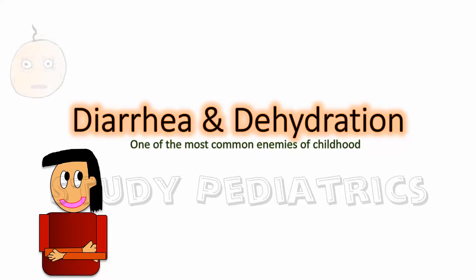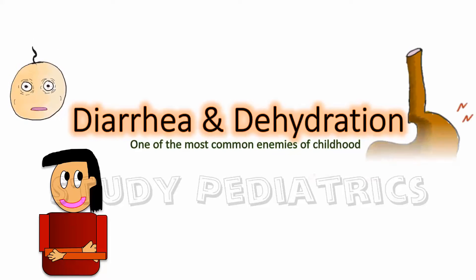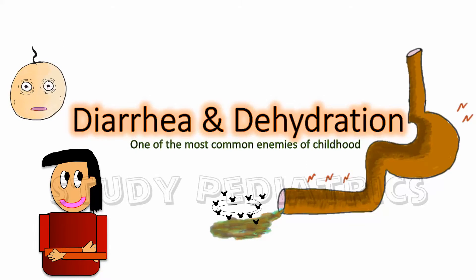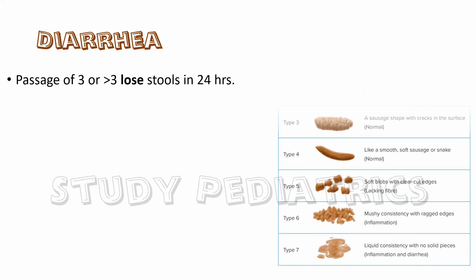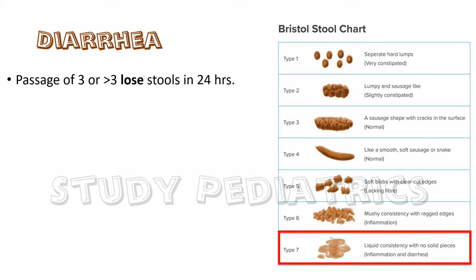Diarrhea and dehydration — one of the most common enemies of childhood. Diarrhea is defined as passage of three or more loose stools in 24 hours. It's important to note the term loose stools. As you can see in the Bristol stool chart, type 7 is called diarrheal stool. Hence, consistency and frequency both are important when we define diarrhea.